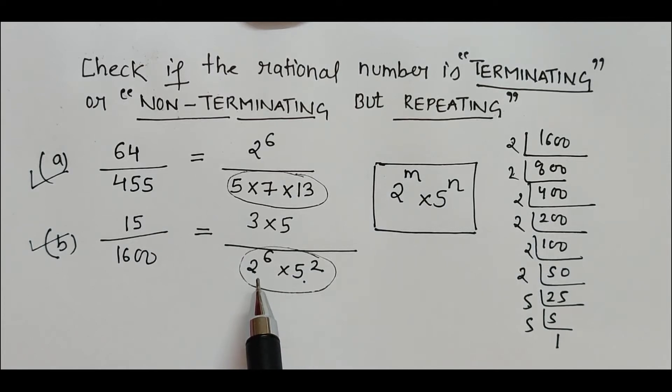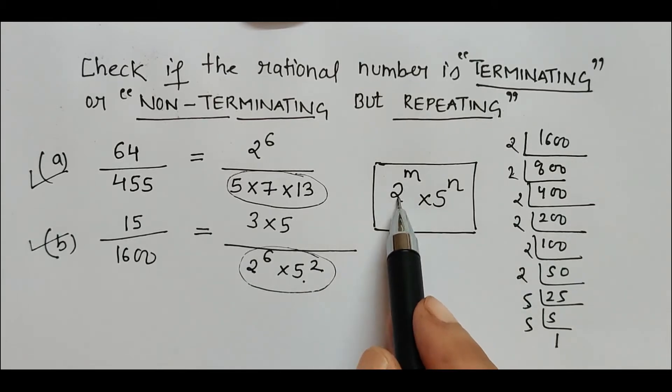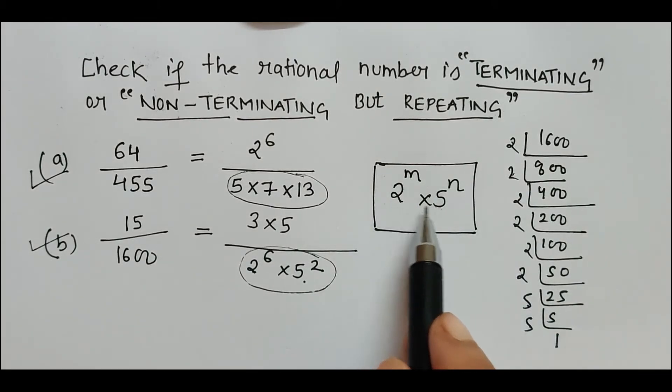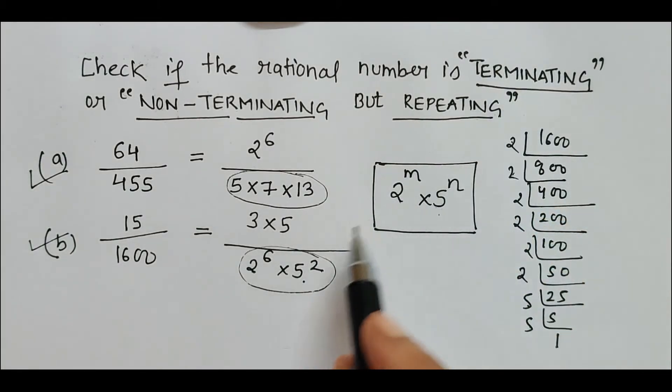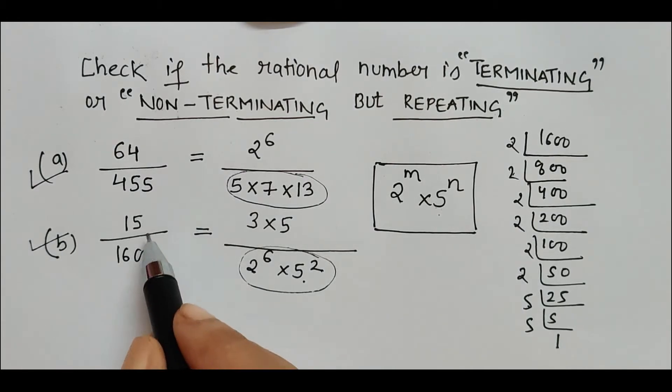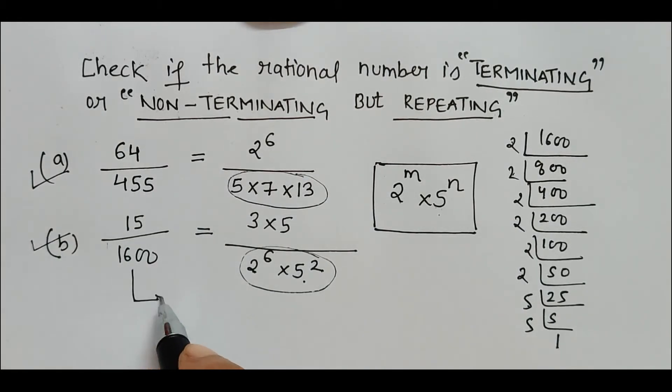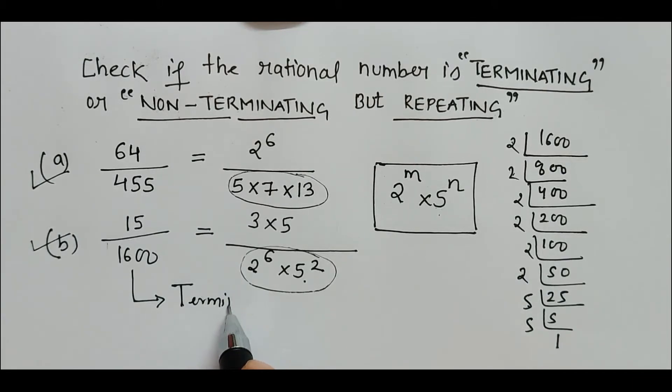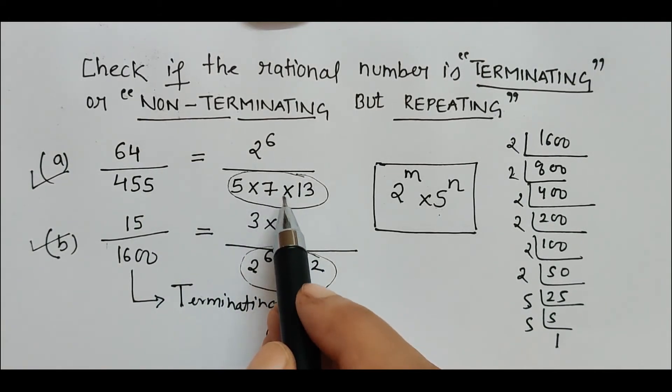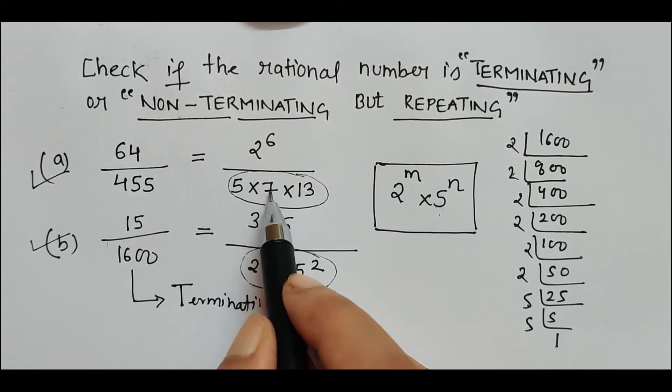Here we can see that the denominator is only having 2 and 5 as the base, which is the required condition for terminating. So we can say that 15 upon 1600 is terminating in nature. This rational number is terminating, that means its decimal expansion will terminate.